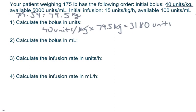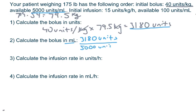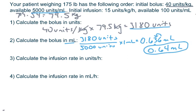For the second step, we do a dosage problem to calculate the bolus in milliliters. He needs 3,180 units, and what you have available is 5,000 units per milliliter. So 3,180 divided by 5,000 gives 0.636 milliliters. Since this is syringe rounding and less than one, round to the hundredths place: 0.64 milliliters is the bolus dose.